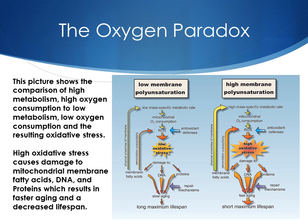Another visualization of the oxygen paradox. This picture shows a comparison of high metabolism and high oxygen consumption to low metabolism and low oxygen consumption, and the resulting oxidative stress. You can see that if there is a lower amount of mitochondrial O2 consumption, there is a decrease in reactive oxygen species, meaning less oxidative stress caused by free radicals, meaning less damage to the membrane fatty acids and DNA proteins, increasing the maximum lifespan. However, on the other hand, if there is a high amount of oxygen consumption, there is more oxidative stress, meaning a shorter maximum lifespan.